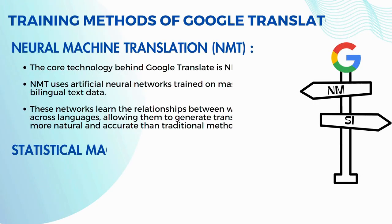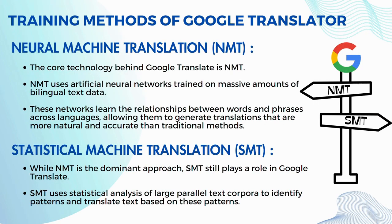Now, let's look at the training methods of Google Translator. Google Translator relies on NMT, which stands for Neural Machine Translation. NMT utilizes artificial neural networks trained on extensive bilingual text data. Through this training, these networks acquire an understanding of the connections between words and phrases in different languages, enabling them to produce translations that are more authentic and more precise compared to conventional approaches.